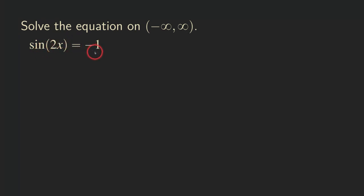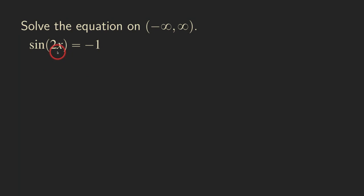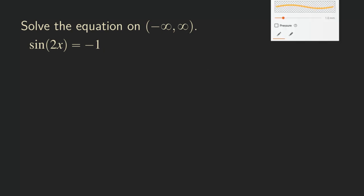This negative 1 tells us that the angle we are going to plug into the sine function to produce negative 1 would be a quadrantal angle. So let's think about which quadrantal angle will actually give us negative 1 when we plug that into the sine function. Let's do some scratch work right here.